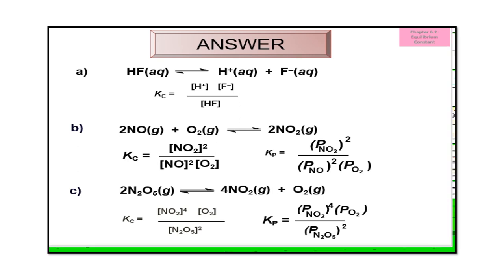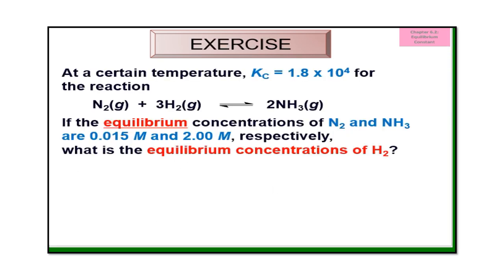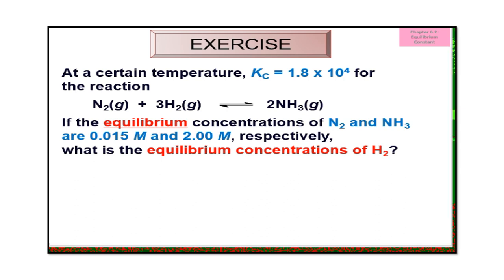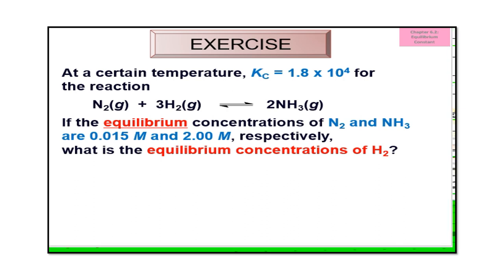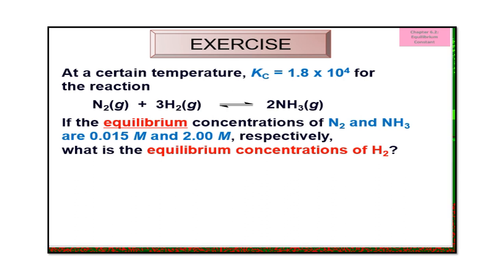For the next exercise: once you know how to write out the Kc and Kp expression, we need to calculate certain things — the concentration of a compound, the partial pressure of a compound, or the Kc and Kp of the system.